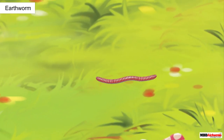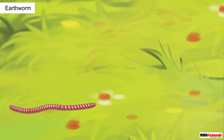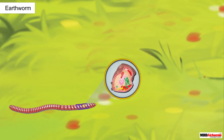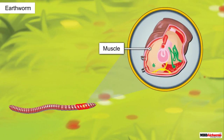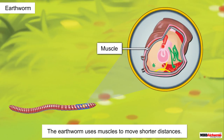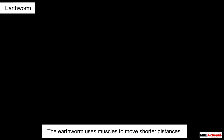Well, the body of an earthworm has many rings. These rings are joined end to end and contain muscles. The earthworm uses these muscles to move shorter distances.